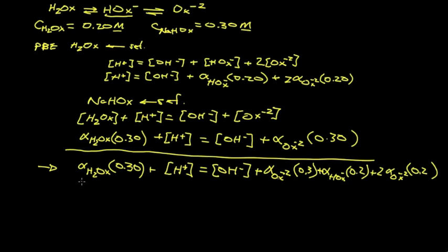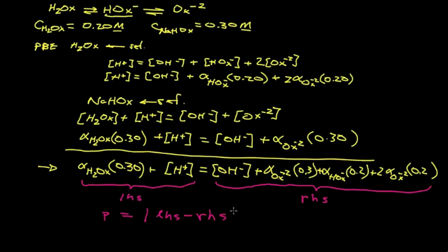And there we have the net PBE. For ease of discussion, I'm going to call this the left-hand side or just LHS for the left-hand side of the equation and all of this the right-hand side of the equation or RHS. I'm going to define a function I'll call pointer function. And I'll define it as P is equal to the absolute value of LHS or left-hand side minus the right-hand side.